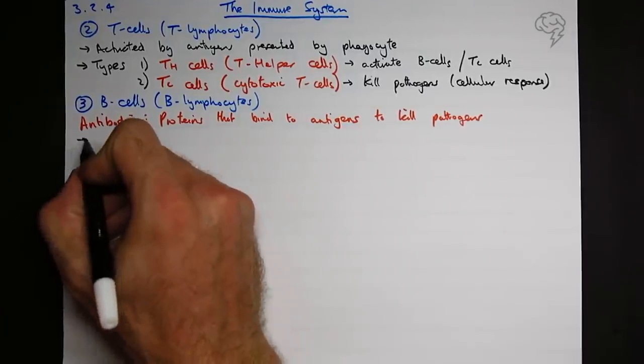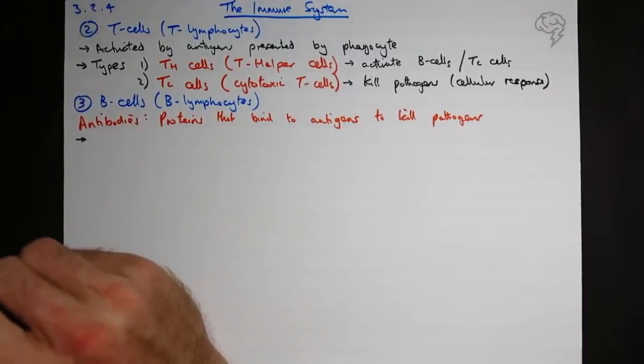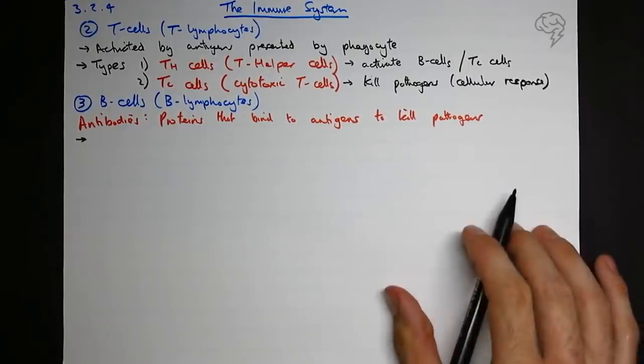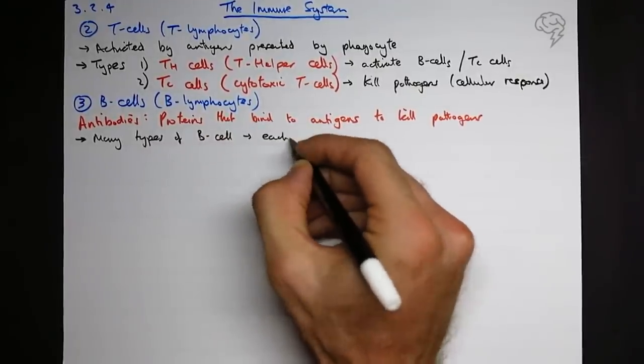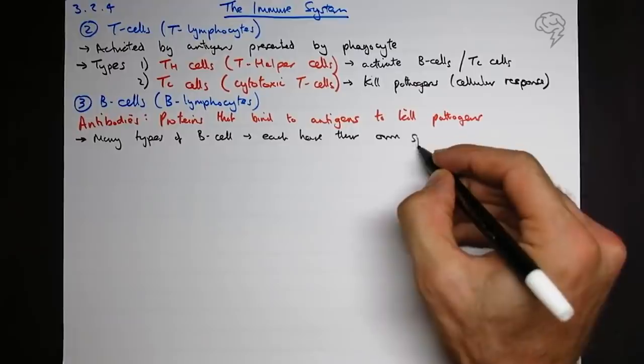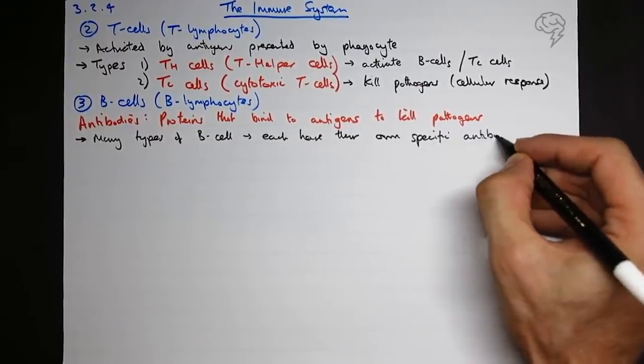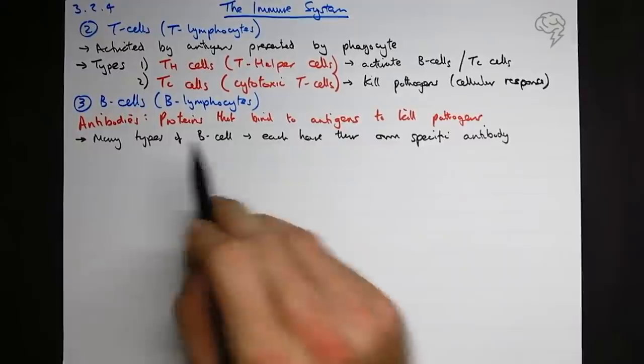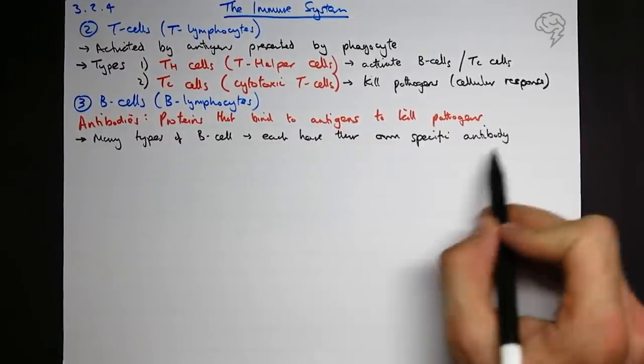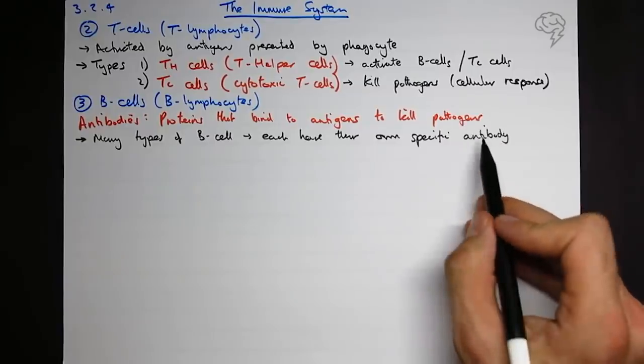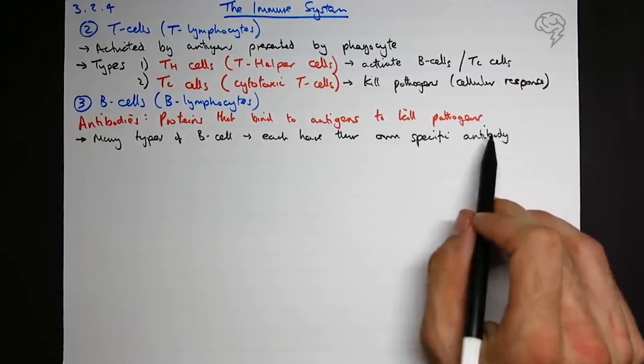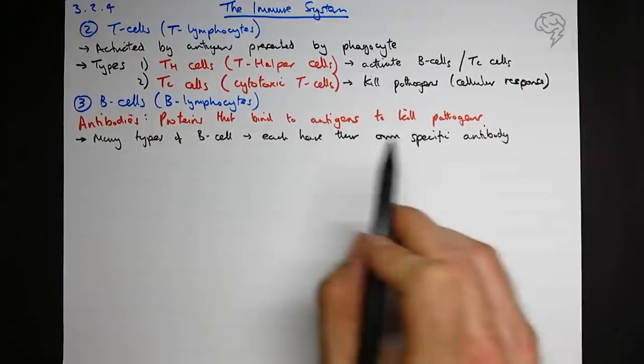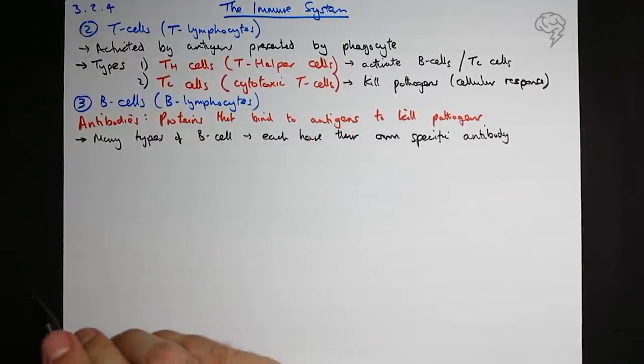Okay, the thing to remember here, where most people find this complicated, is this stage. We're going to summarize it as clonal selection. But before I give you the definition of that, I want to lay this out. So there are many types of B-cell, right? Each have their own specific antibody. So each B-cell has their own antibody, and only one of these antibodies, because they're a protein with a specific tertiary shape, and they're only going to form a complex with one thing. Each antibody is going to be specific to the antigen, so they're only going to form an antigen-antibody complex with one of them.